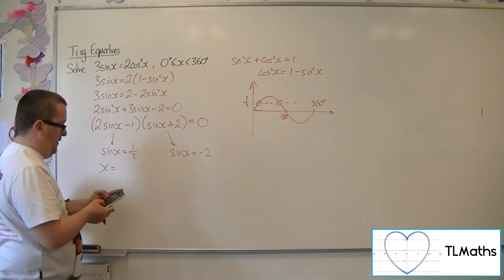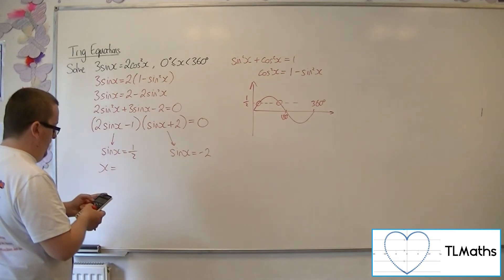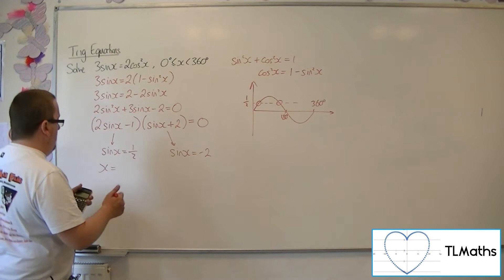So if I inverse sine of a half, and we're in degrees, inverse sine of a half, we get 30 degrees. So that's your 30.